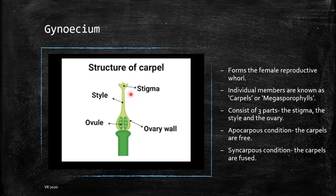The stigma is the receptive part of the carpel. This is where the pollen grain will come and attach to the female reproductive organ, that is the gynecium. The style is the pathway through which the pollen tube will get a route to enter into the ovary. Through this it will go and release the microspores, wherein it will bind with the megaspore and form an embryo.